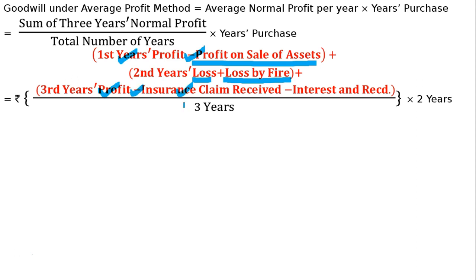Also, interest on investments and dividends received is included in the third year's profit. This is non-operating income — interest and dividend received should both be deducted. This was incorrectly noted earlier; the correct item is 'interest and dividend received.'